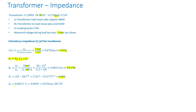The impedance can be written in rectangular format as 0.00517 + J × 0.0699 per unit. In polar format it is 0.0701 per unit at an angle of 85.78 degrees. In exponential format it is 0.0701 per unit times e to the J times 85.78 degrees.